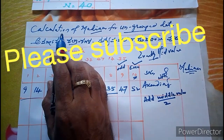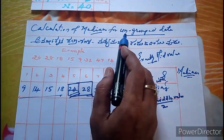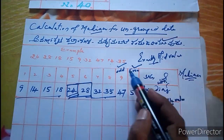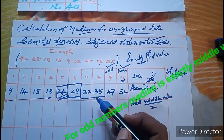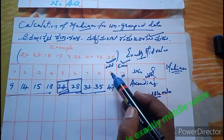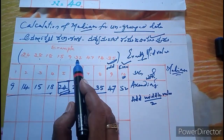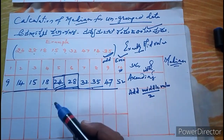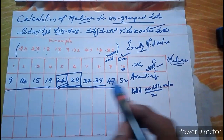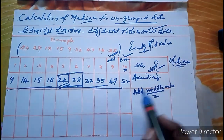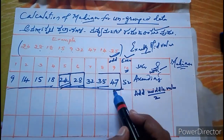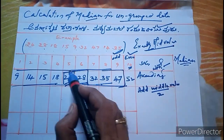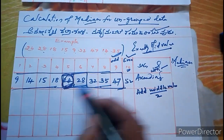Now let us take the example of calculation of median for ungrouped data. Take nine values — since nine is odd. The values are: 24, 28, 18, 59, 32, 47, 14, and 35. You arrange all these numbers in ascending order. The exactly middle value is the median.